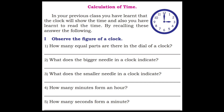In your previous class you have learned that the clock will show the time and also have learned to read the time. By recalling these, answer the following. First main: Observe the figure of a clock. First question: How many equal parts are there in the dial of a clock? 12 equal parts.